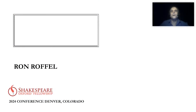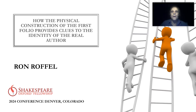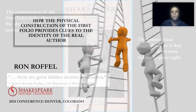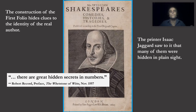Thanks for allowing me to present this video for the 2024 Shakespeare Oxford Fellowship Conference. I will show how the physical construction of the first folio provides clues to the identity of the real author. In doing so, I will discuss several typesetting anomalies in the first folio that help resolve the authorship issue. The construction of the first folio hides clues to the identity of the real author. The printer Isaac Jaggard saw to it that many of them were hidden in plain sight.